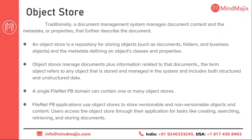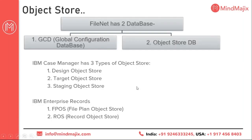You can have multiple object stores in FileNet — it is not limited to one. FileNet has two kinds of databases: one is your GCD — Global Configuration Database — and the second is your object store database. The GCD stores all details about the FileNet system installed on your machine — it does not store end user or developer details, only FileNet system-level configuration.